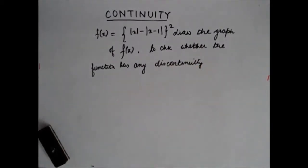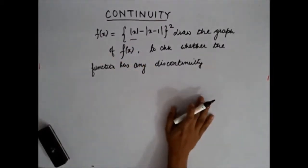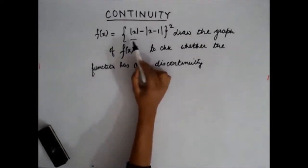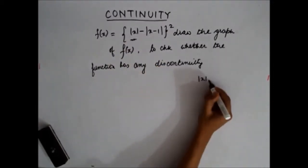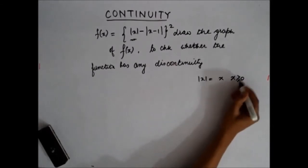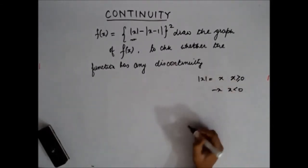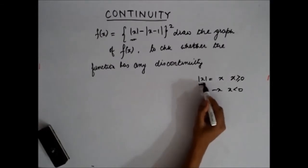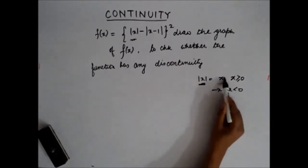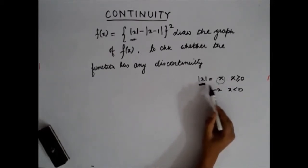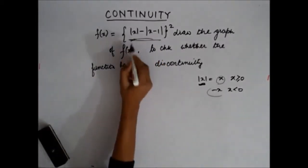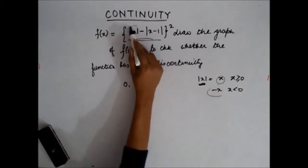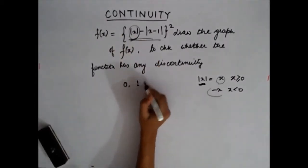In questions like this, the first thing you need to do is get rid of the mod sign and find the expression of f(x) without the mod sign. You know that mod of x equals x for x ≥ 0, and equals minus x for x < 0. So whatever is inside the mod sign, when it is greater than 0 we keep the same value, and when it's less than 0 we take the negation. Here, the critical points are 0 — where the first mod changes sign — and 1, where the second mod changes sign.